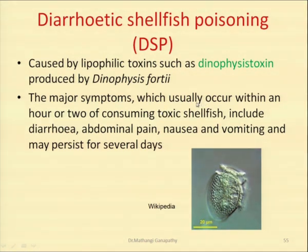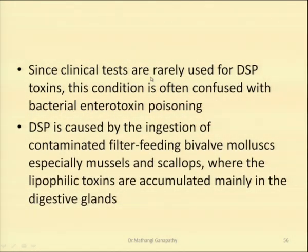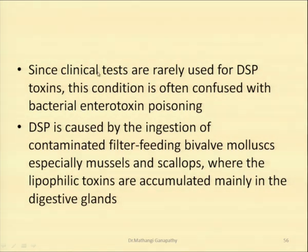Diarrhetic shellfish poisoning, or DSP, is caused by lipophilic toxin like dynophysis toxin produced by Dinophysis species. The major symptoms, usually occurring within an hour or two of consuming the toxic shellfish, include diarrhea, abdominal pain, nausea, vomiting, and this can continue for days together. Clinical tests are normally not used for DSP toxin detection since the symptoms exhibited are usually the same as those exhibited by people who have consumed any bacterial enterotoxin. So this condition is normally confused with normal bacterial enterotoxin poisoning.